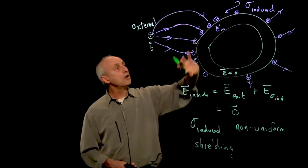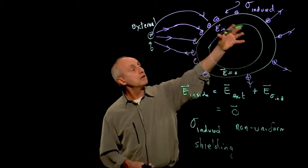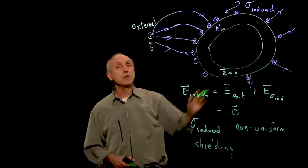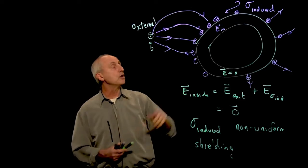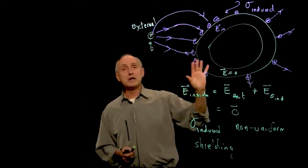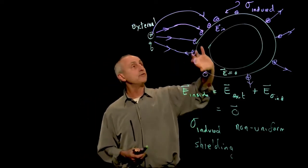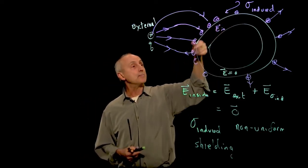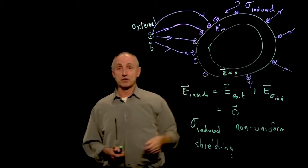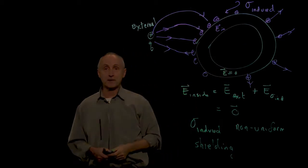And this process is something that we refer to as shielding. That's our first look at what happens to the charges. What's important here is that the free charge carriers are on the boundary — on the surface of the conductor.